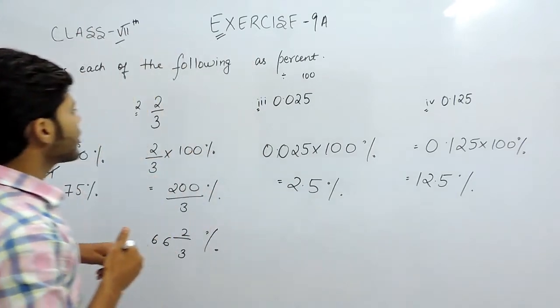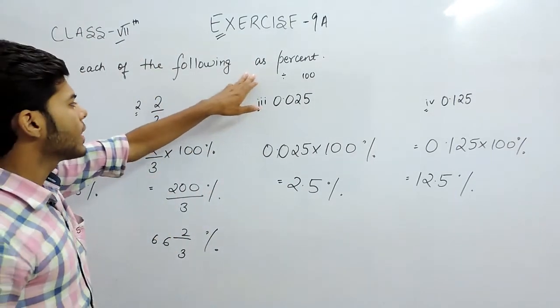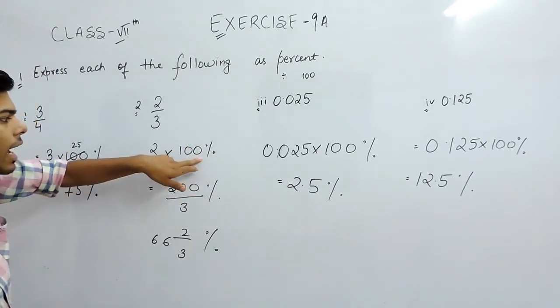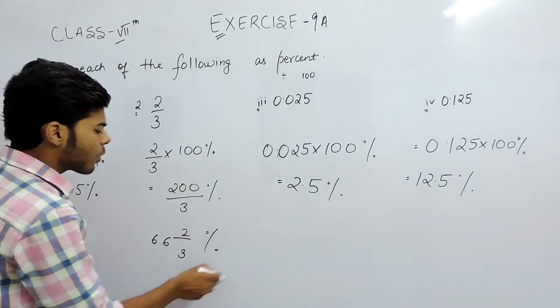So whenever we have to convert a given quantity to percent, we always multiply it with 100 percent, because we take the base as 100 and that gives us the required answer.